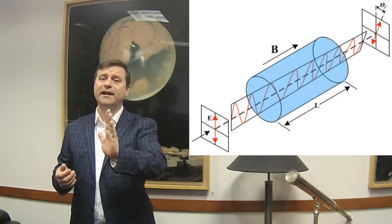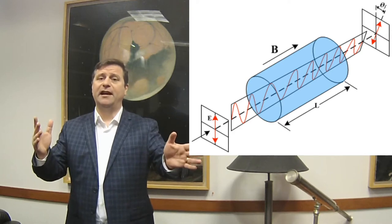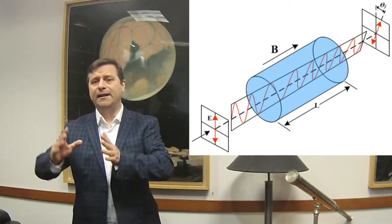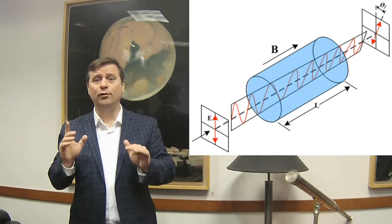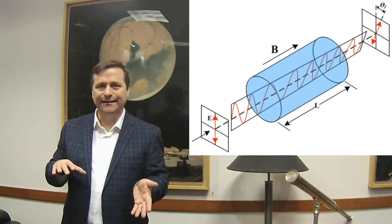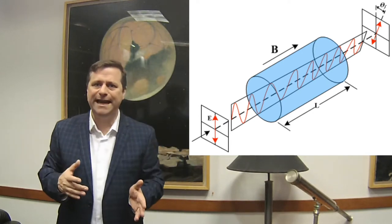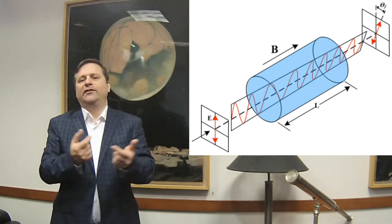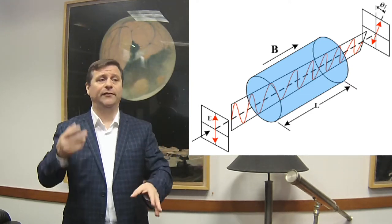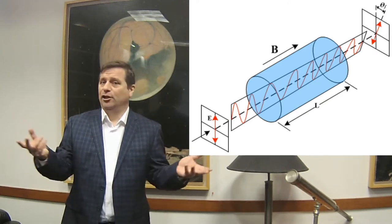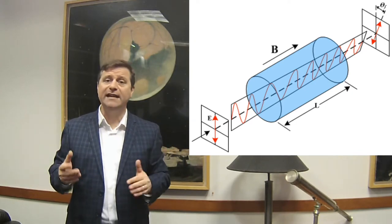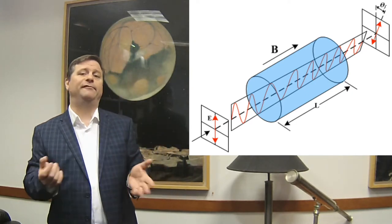About 14 years later, around 1845, with polarized light firmly established as a concept, Faraday discovered that if you take polarized light and apply a strong magnet to it, the light can be rotated by the magnet. So light can be rotated in the presence of a magnet. This is called Faraday rotation, discovered in 1845.